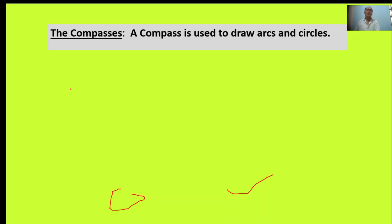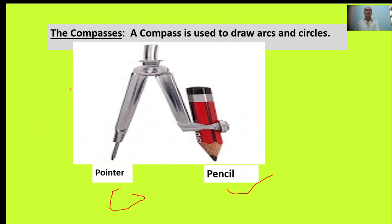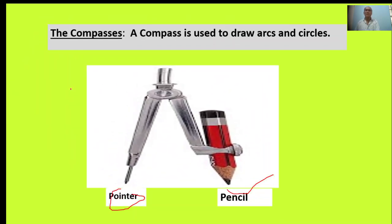Next, the compasses. A compass is used to draw arcs and a circle. Here, an image is given. This is called compasses.